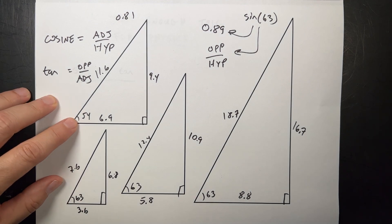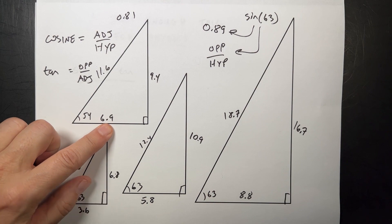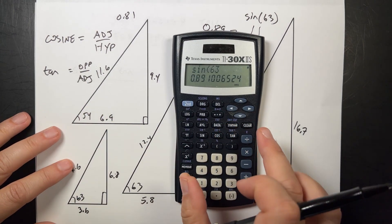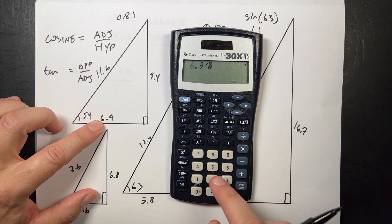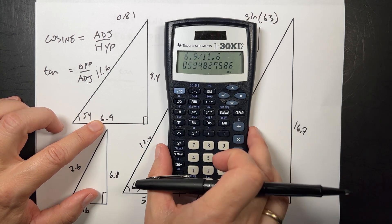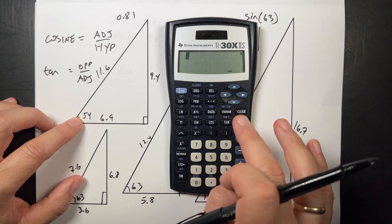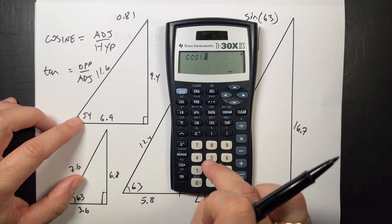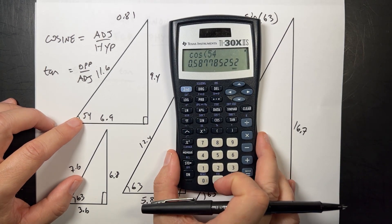Let's check this. Let's check it for this one. Adjacent over hypotenuse. Here's the adjacent side, 6.9, and that's hypotenuse, 11.6. Let's take that ratio. 6.9 divided by 11.6, I get 0.59. Now let's take the cosine of this angle, 54. Cosine 54 equals about the same thing. So that works.